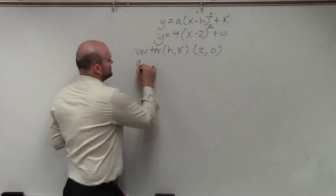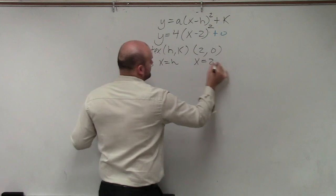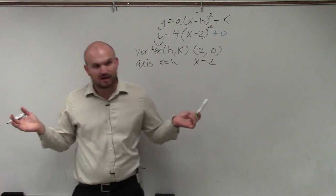My axis of symmetry is x equals h. Well, I already know h, so that's x equals 2. Boom, done. That's very easy, right?